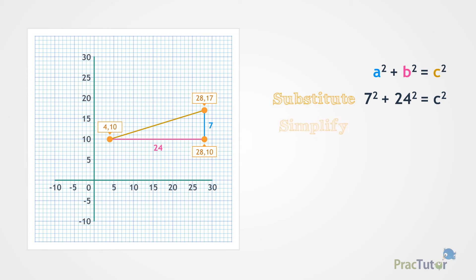Next, we need to simplify the problem. Then, we take the square root of each side of the equation to solve for c.